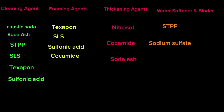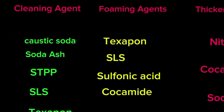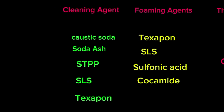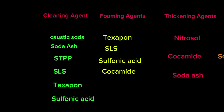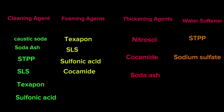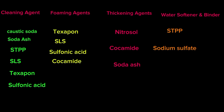This is the chart showing the category of the main ingredients used in this recipe. Some ingredients play multiple roles in the formulation of liquid soap — like SLS, texapone, and sulfonic acid, which are considered foaming agents as well as performing cleaning tasks. This is why you can make liquid soap with four or three ingredients, and so on. STPP also falls in the category of water softener and binder, while caustic soda is a cleaning agent that also plays a role in preservation.